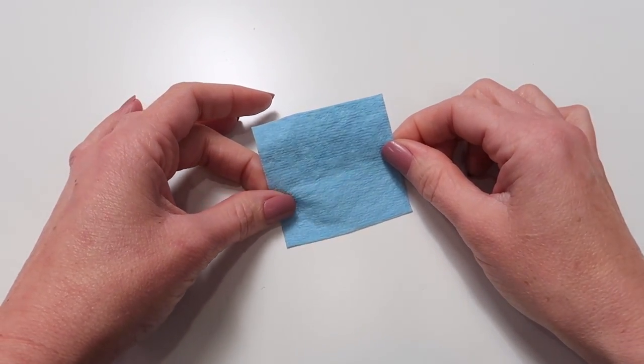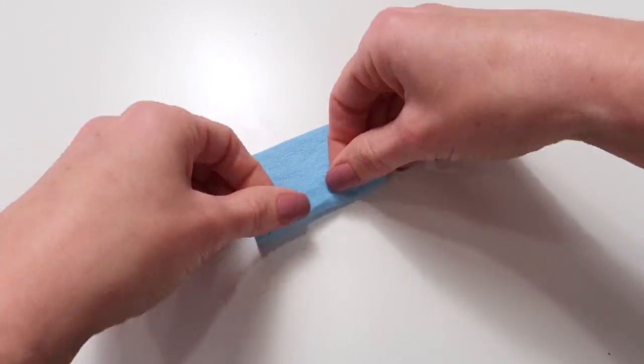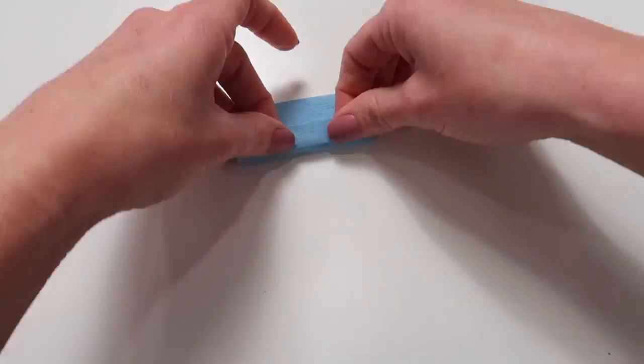With this little square, you're going to fold it over and under about three times, accordion style, and press the creases firmly so it stays in place.